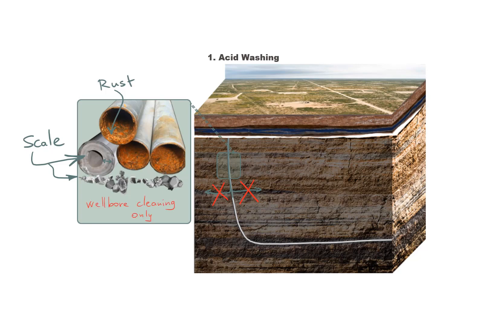rust and other debris that negatively impacts production and restricts the flow in the well. As you can see here, scale can build up to a degree when it literally chokes our production. That is why in some conditions we have to perform acid washing treatments.